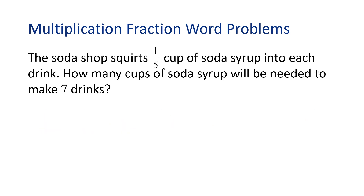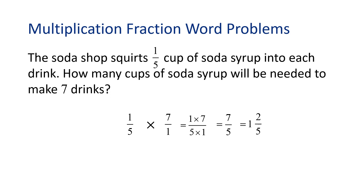This is making me thirsty, so I'm going to the soda shop. The soda shop squirts one-fifth cup of soda syrup into each drink. How many cups of soda syrup will be needed to make seven drinks? Here's another situation where we will multiply. One-fifth cup of soda syrup times seven drinks will tell us how many cups of soda syrup we need. We can write seven as a fraction with one in the denominator. Multiplying straight across gives us one times seven over five times one, or seven-fifths. Let's change this into a mixed number: five goes into seven one time with a remainder of two, or two-fifths. So seven-fifths equals one and two-fifths. The soda shop needs one and two-fifths cups of soda syrup to make seven drinks.